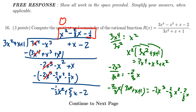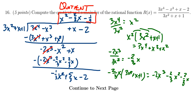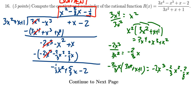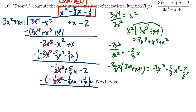Let's label this: our quotient is x squared minus 2/3 x minus 1/9. We still need to find the remainder, so we're not done yet. We multiply negative 1/9 by the divisor 3x squared plus x plus 1: that gives negative 1/3 x squared minus 1/9 x minus 1/9. We subtract this from above. The leading term cancels. For the x coefficient: 5/3 plus 1/9, rewriting as 15/9 plus 1/9, gives 16/9.